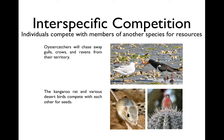Interspecific competition is where individuals compete with members of another species for resources. For example, oyster catchers will chase away gulls, crows, and ravens from their territory — they're very protective of their habitat. Also, the kangaroo rat and various desert birds compete with each other for seeds in the desert. Those are the three major types of biotic relationships: predation, symbiosis, and competition.